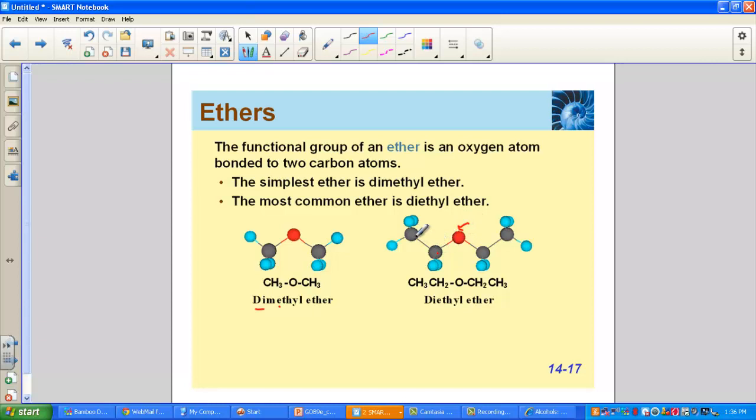Here we have another common ether. Again, this is the oxygen atom, and on either side there are two carbon branched chains, so we call that ethyl. This is diethyl ether.